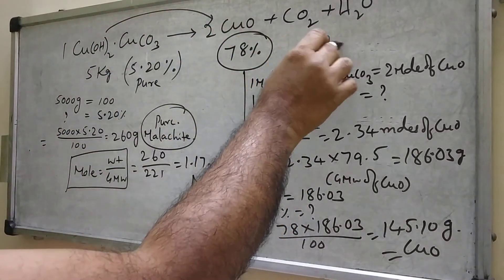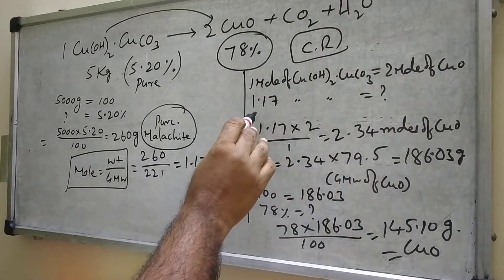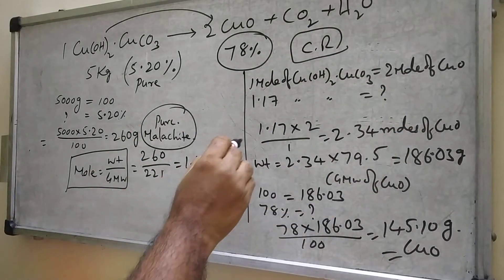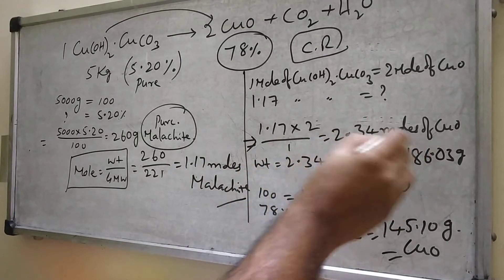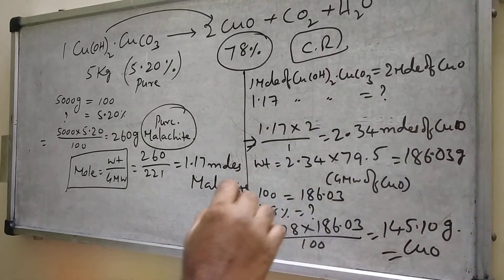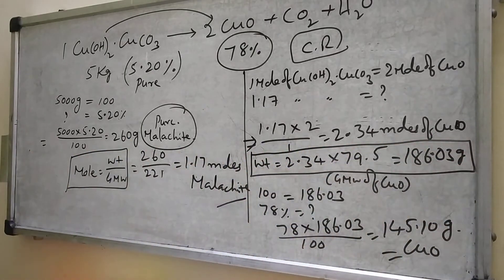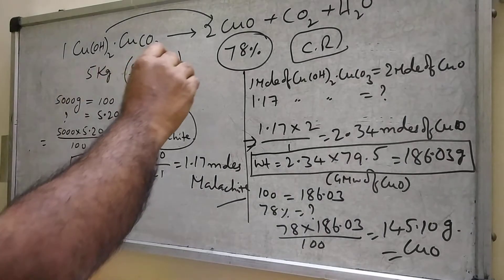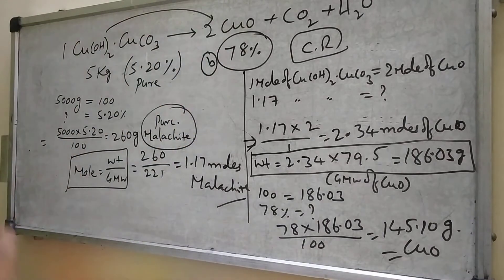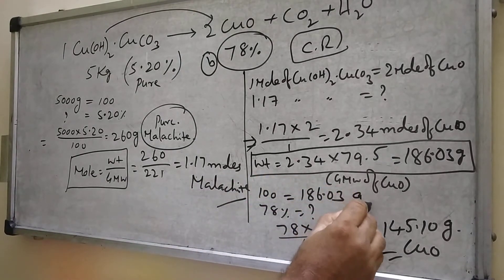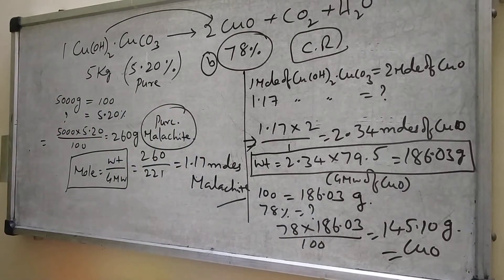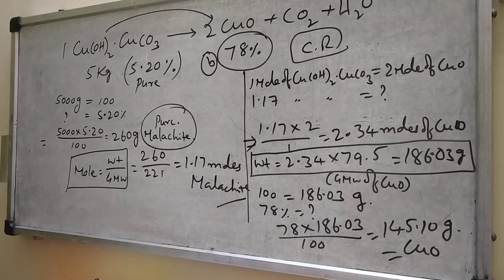Based on the chemical reaction, one mole gives two moles, so these many moles gives how much — I calculated how many moles of copper oxide are formed. From this I converted into mass of copper oxide. It yields only 78%, meaning 100% gives this many grams, and 78% gives how much — calculated like this — finally you get 145.10 grams of copper oxide formed.